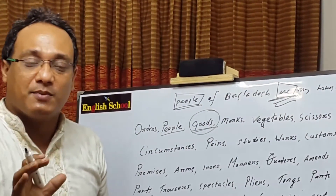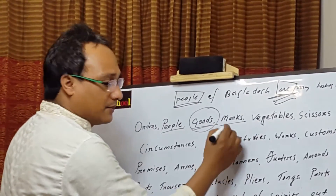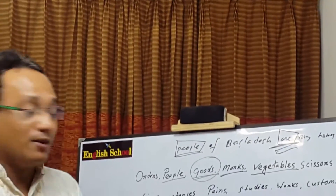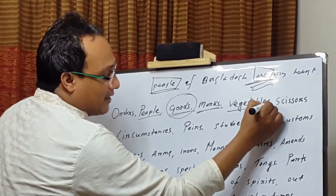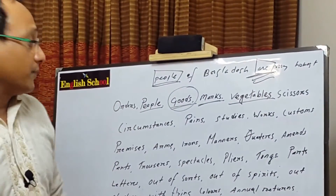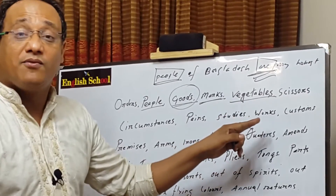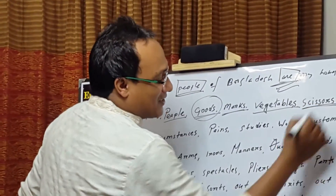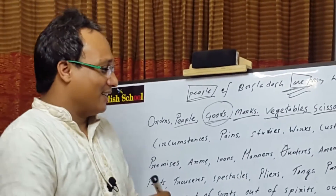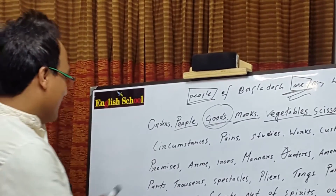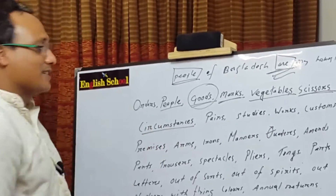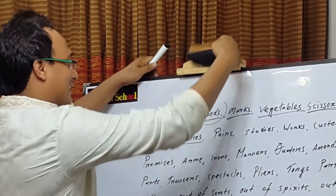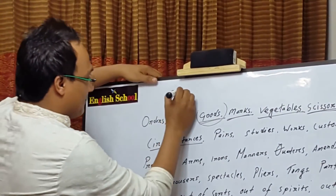Next is 'vegetables.' We sometimes omit the 's,' but we must use 'vegetables' — for example, 'a point of vegetables.' Next is 'scissors' — we usually consider the pair of scissors. Then comes 'circumstances.' We sometimes say 'What is your circumstance?' but it should be 'circumstances.'